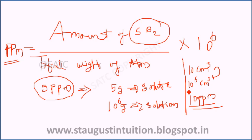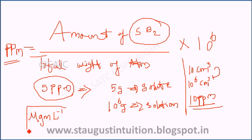When mass-volume ratios are considered, the most common unit is microgram per milliliter — written as μg mL⁻¹. This is the commonly used unit for ppm in mass-volume ratio.